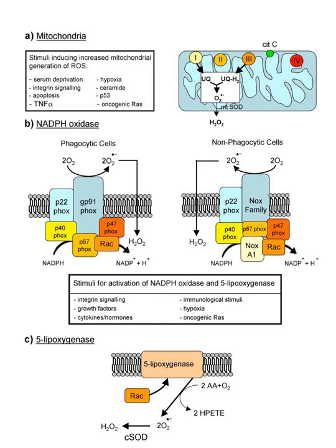The reduction of molecular oxygen produces superoxide and is the precursor of most other reactive oxygen species. Dismutation of superoxide produces hydrogen peroxide H2O2. Hydrogen peroxide in turn may be partially reduced to hydroxyl radical, or fully reduced to water.